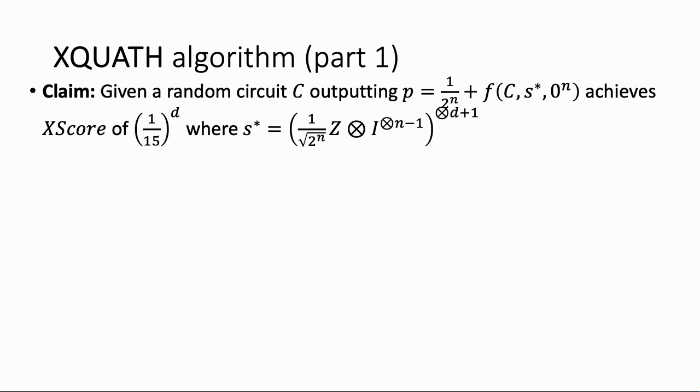Here's the algorithm. Given a random circuit C, we output P, which is one over two to the N plus the value of a very specific path S-star. S-star is a D+1 tuple of N-qubit Pauli operators, and the tuple we choose is simply Z on the first qubit tensor I on everything else, repeated D+1 times. That's it. If you think about this as a circuit of depth D+1, each layer is very simple: Z on the first qubit, I everywhere else. It's hard to imagine a simpler algorithm.